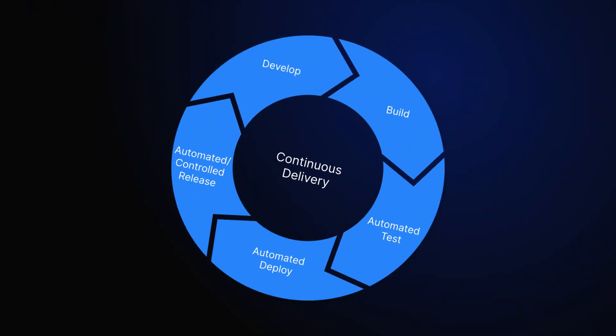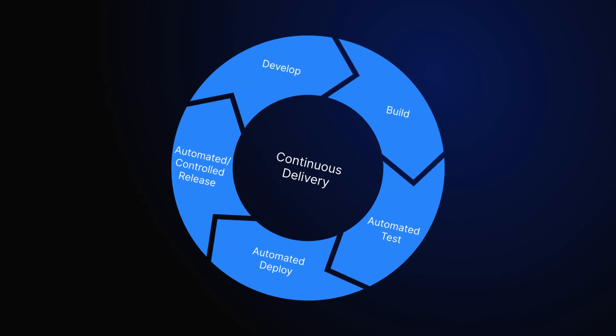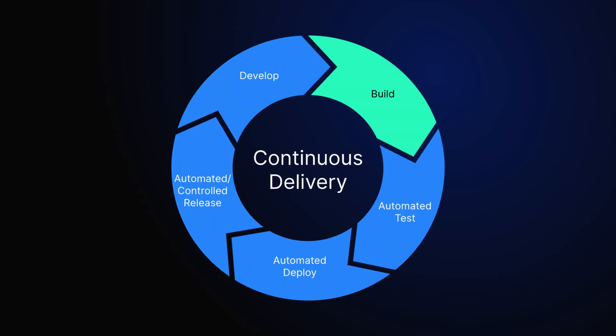Once code changes are successfully integrated, Continuous Delivery, or CD, automates the deployment of applications to various environments, like development and staging, where the software is tested. If those tests pass, the software may also be deployed to production. With continuous delivery, every successful code change can be automatically deployed to production, ensuring the latest features and bug fixes are quickly available to users.